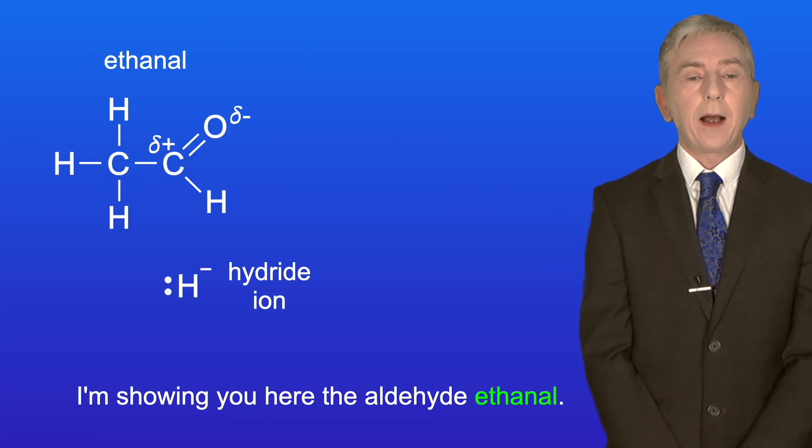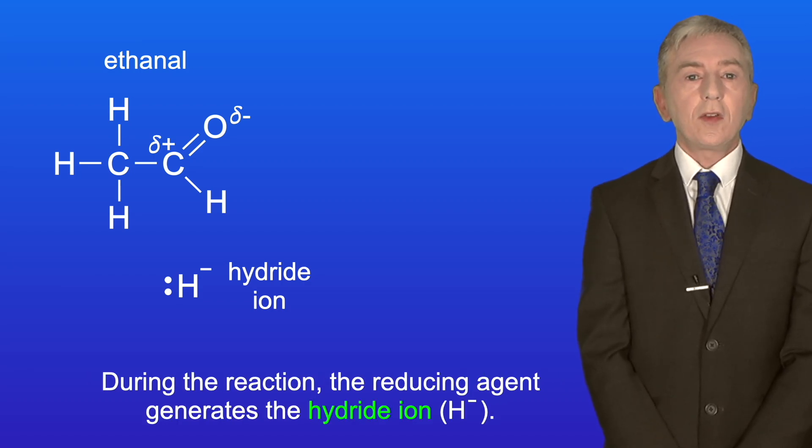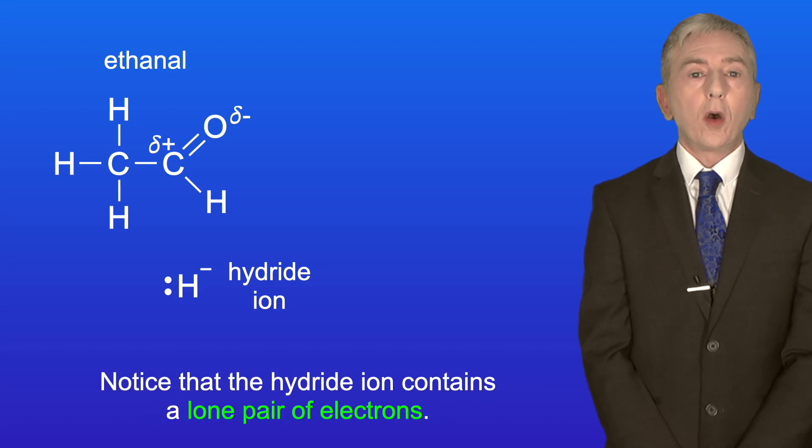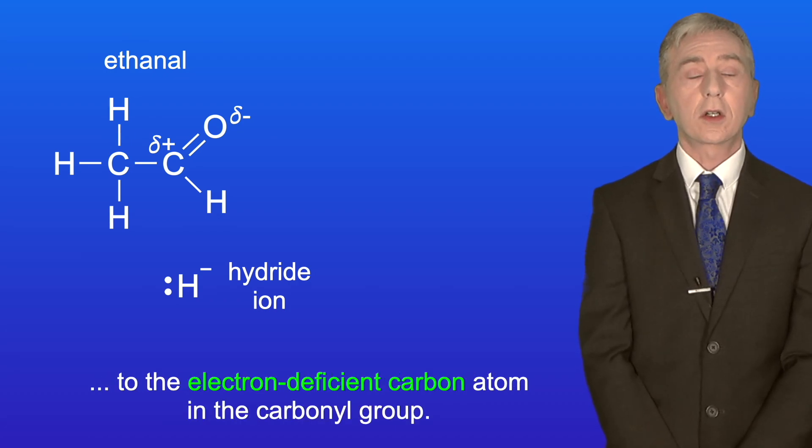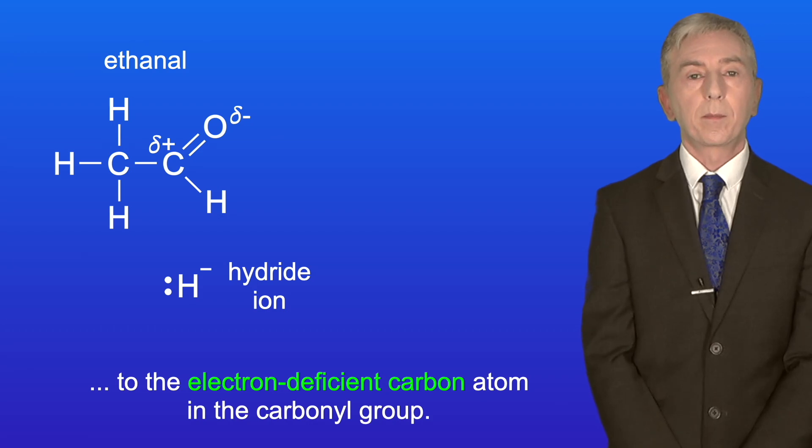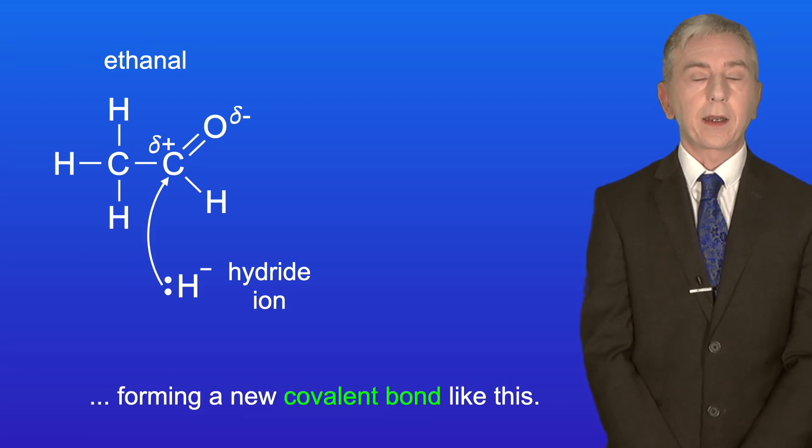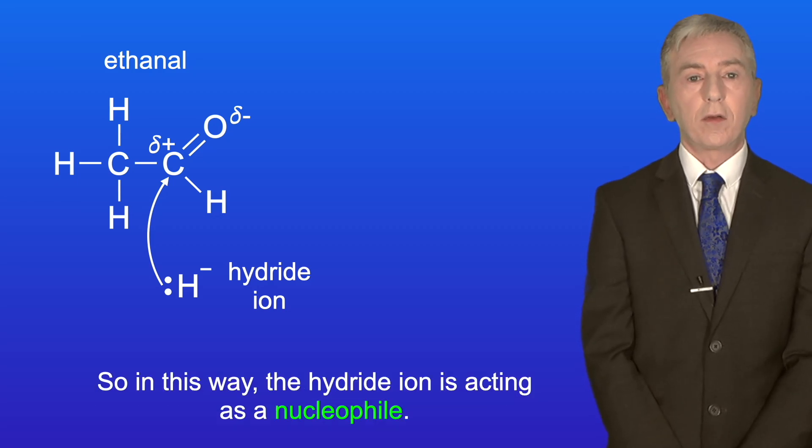I'm showing you here the aldehyde ethanal, and as you can see I'm showing the polarity of the carbonyl group. During the reaction, the reducing agent generates the hydride ion H-. Notice that the hydride ion contains a lone pair of electrons. In the first stage, the hydride ion is attracted to the electron deficient carbon atom in the carbonyl group. The hydride ion donates its pair of electrons, forming a new covalent bond. So in this way the hydride ion is acting as a nucleophile.